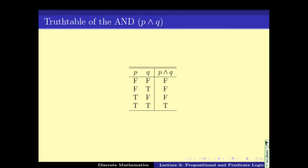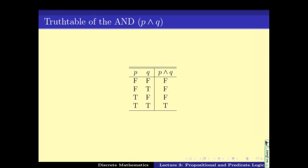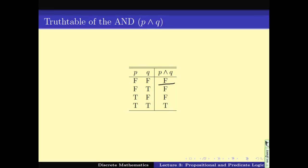Let's see the truth table. If p and q are two statements and we say 'p AND q': if p is false and q is false, then p AND q is false. This is natural — if any one of them doesn't happen, the whole thing doesn't happen either. False AND false gives false. False AND true gives false. True AND false gives false. True AND true gives true. That means only when both p and q are both true, the combined statement p AND q is also true.